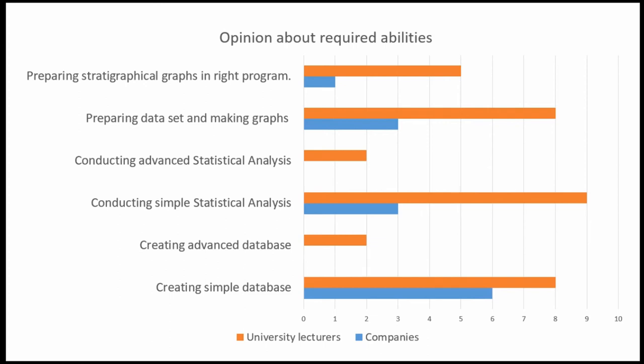The chart shows that universities teach more than the market expects in terms of statistical and other data analysis programs. My proposal is that bachelor level represents the general professional level and master level the scientific level, so statistical programs should be taught at master level, not bachelor level. This is important because there is a limited number of teaching hours and it matters to choose what is most important at each stage.